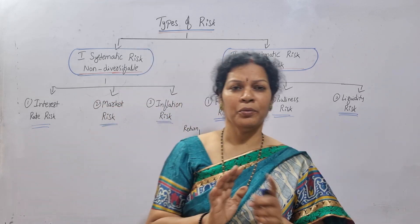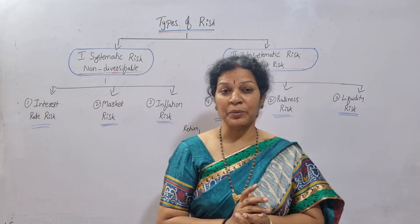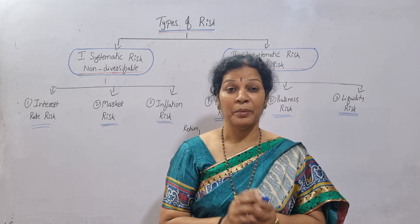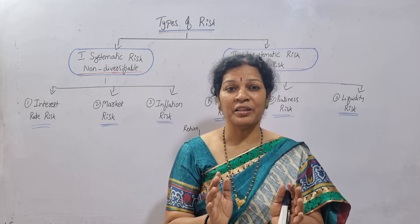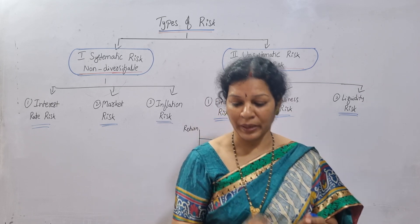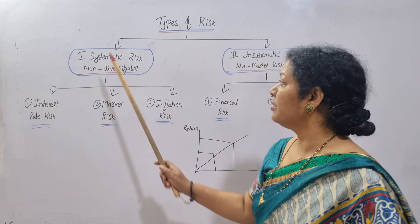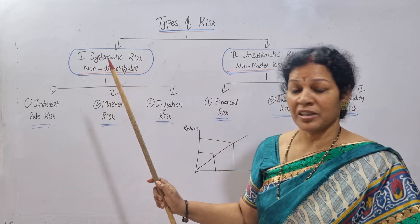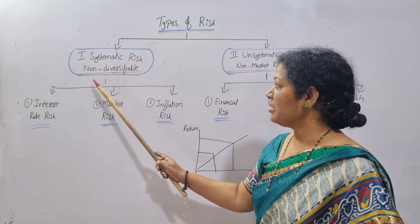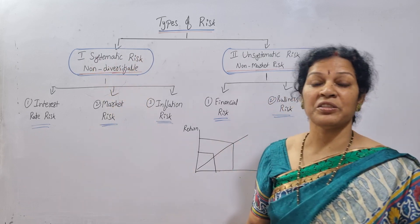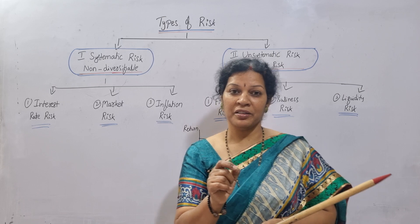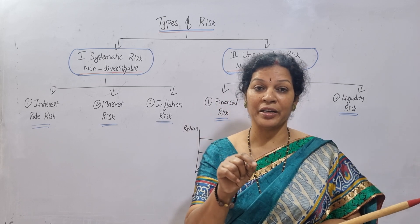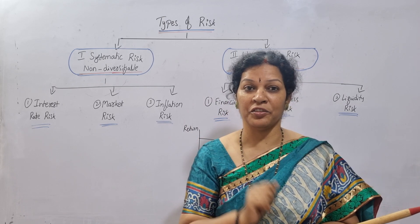Now we'll see types of risk — what kinds of risks are there. Mainly, risks are divided into two parts. One is systematic risk. Systematic risk is also called non-diversifiable risk. It is related to the economic conditions and market conditions.